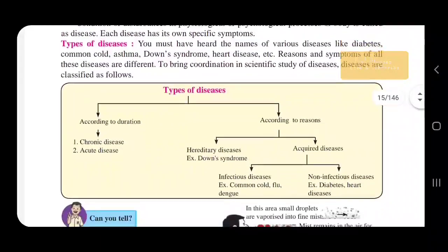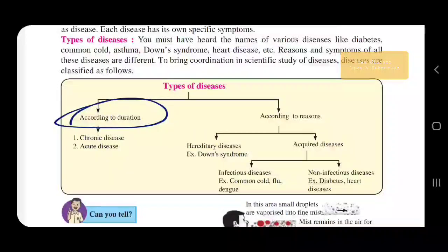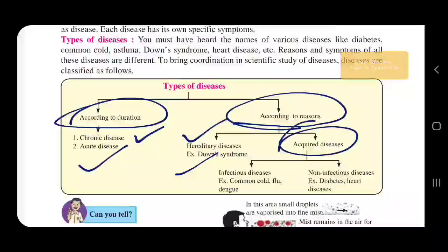Further, diseases are classified into patterns. Diseases are first divided according to duration — they could be chronic or acute. They are also divided according to reason: hereditary, passing from one generation to another, for example Down syndrome; or acquired, which could be infectious like common cold, flu, and dengue, or non-infectious like diabetes and heart disease.